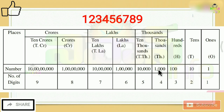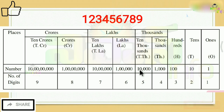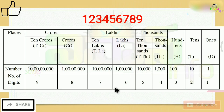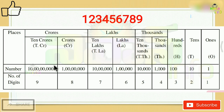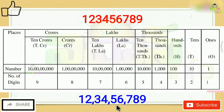A single comma means thousands — the number to its left is in the thousands. Two commas means lakhs. Three commas means crores. If there are three commas and two digits to the left of the last comma, that means it is in the 10 crores place. So three commas with two digits on the left side means 10 crores.